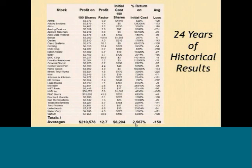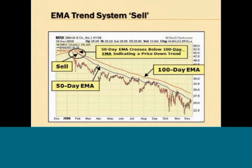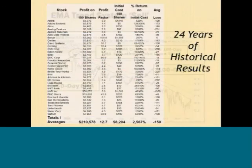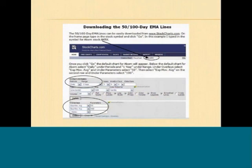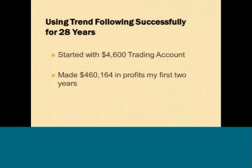When you look at these price charts, it gives you an instant picture of whether you should be buying or selling a stock. You simply want to follow the price trend. You can download these 50- and 100-day EMA lines easily on StockCharts.com — there are many financial websites that allow you to download the 50- and 100-day EMA. It gives you an instant picture of whether you should be buying or selling. I've been using this trend-following system for more than 28 years.